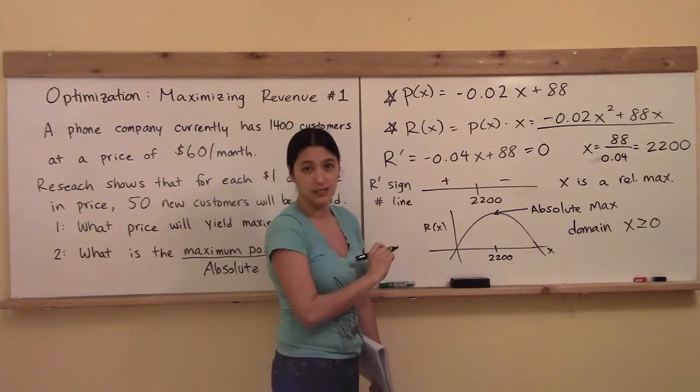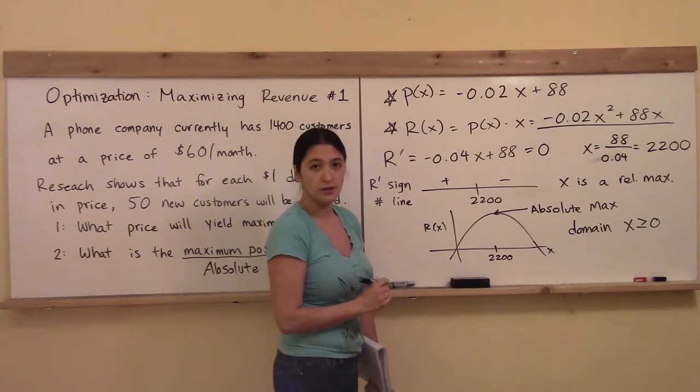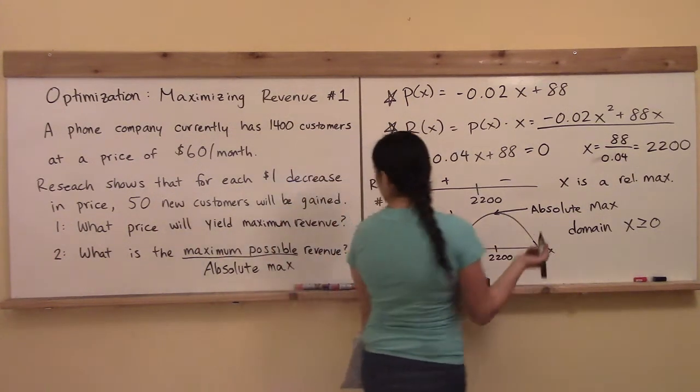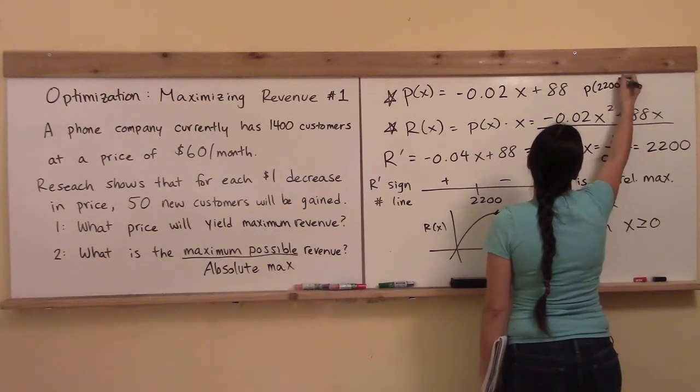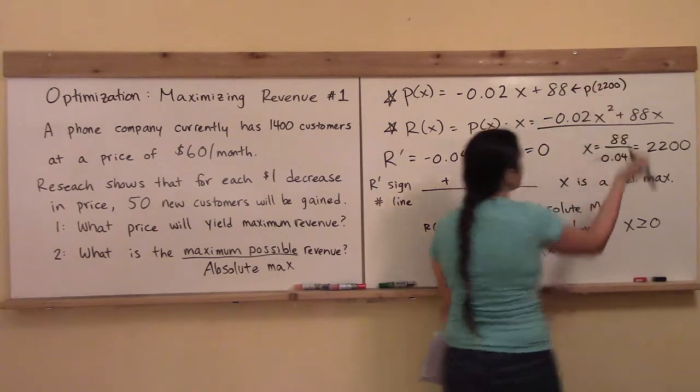and I have a price function which dictates what my price will be given a customer level. And so in order to answer what price will yield maximum revenue, I only need to plug in 2,200 into the price function right there.